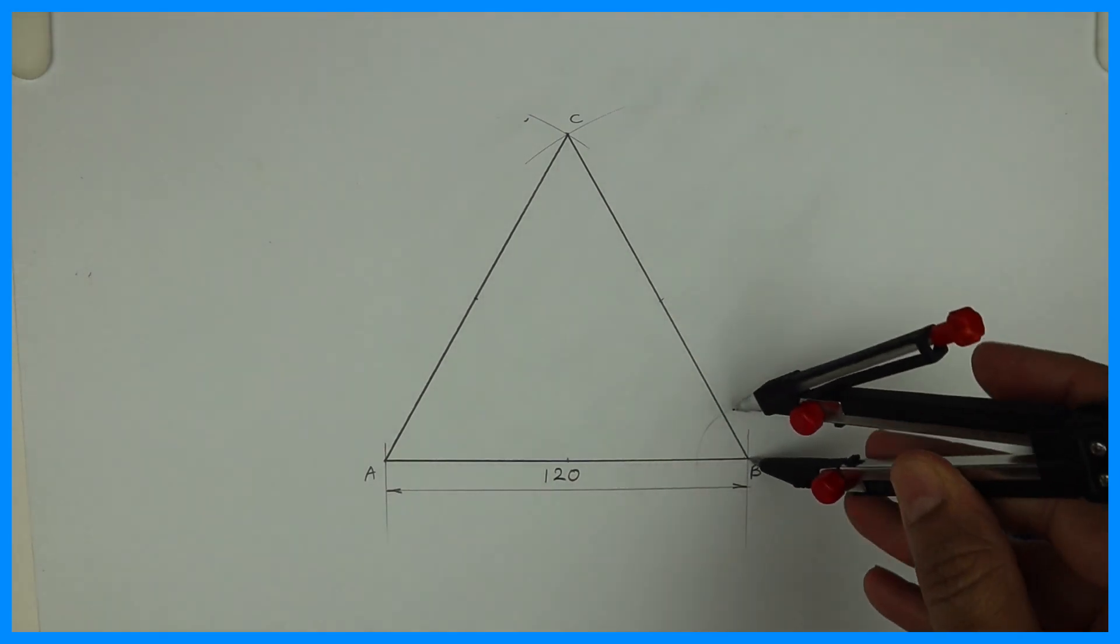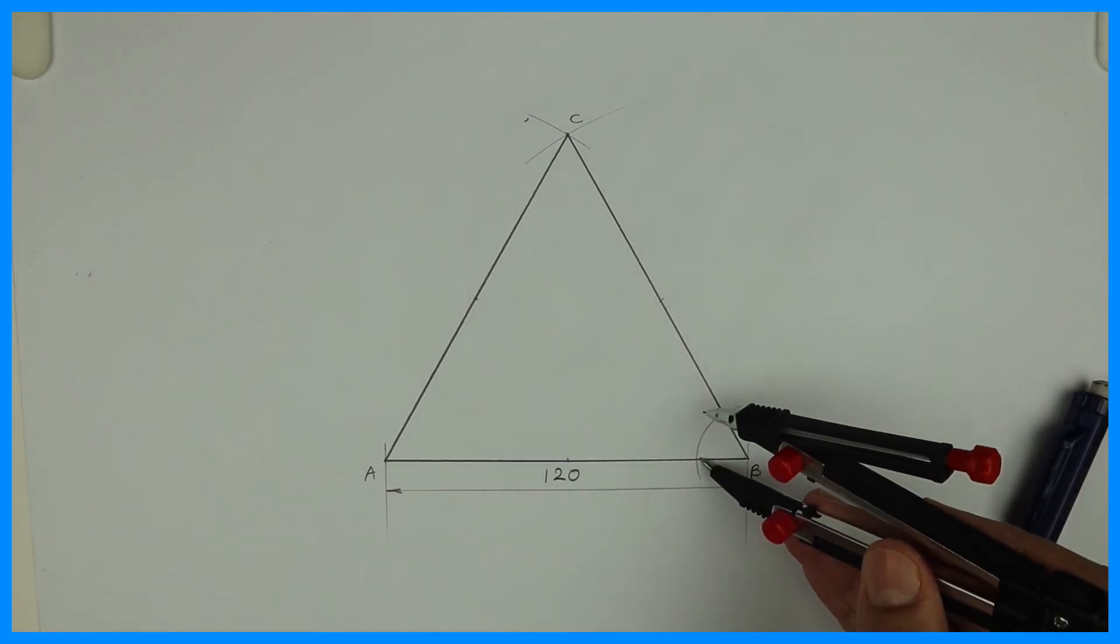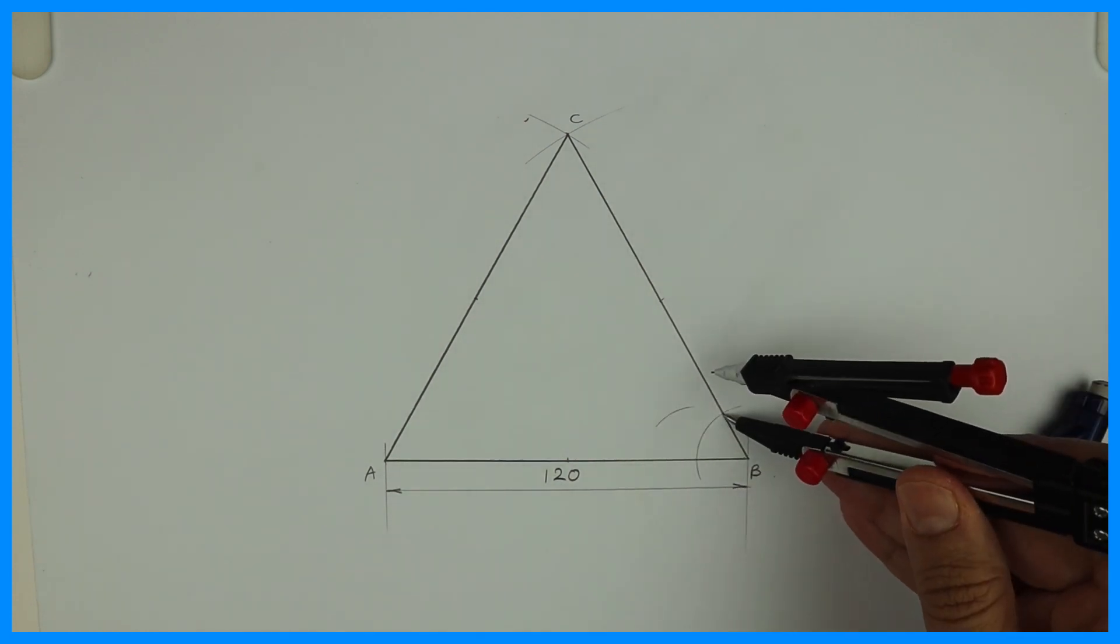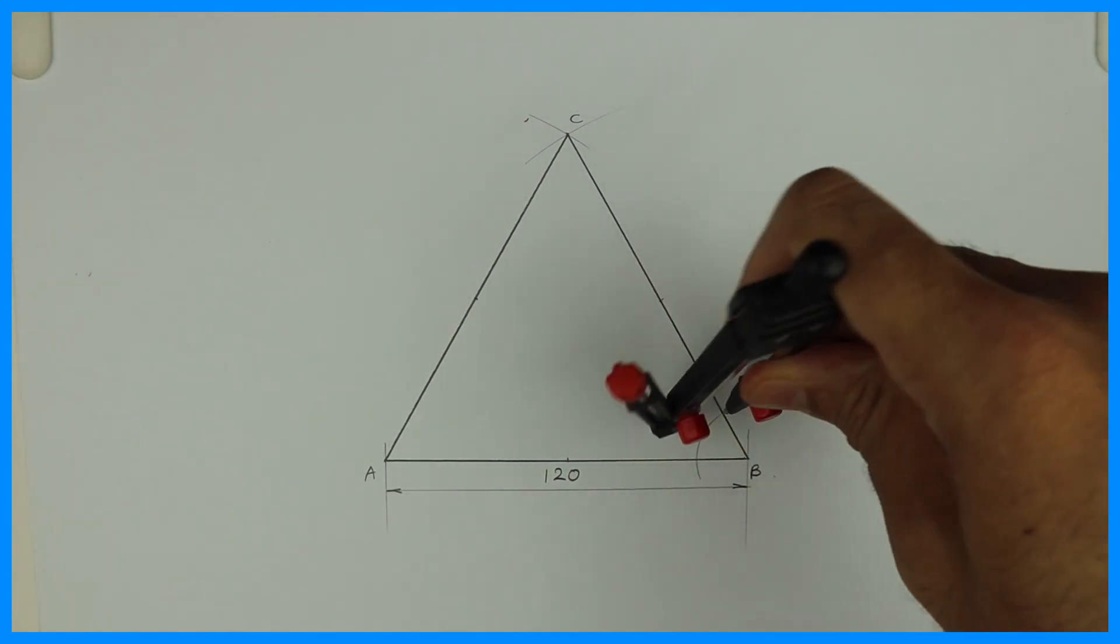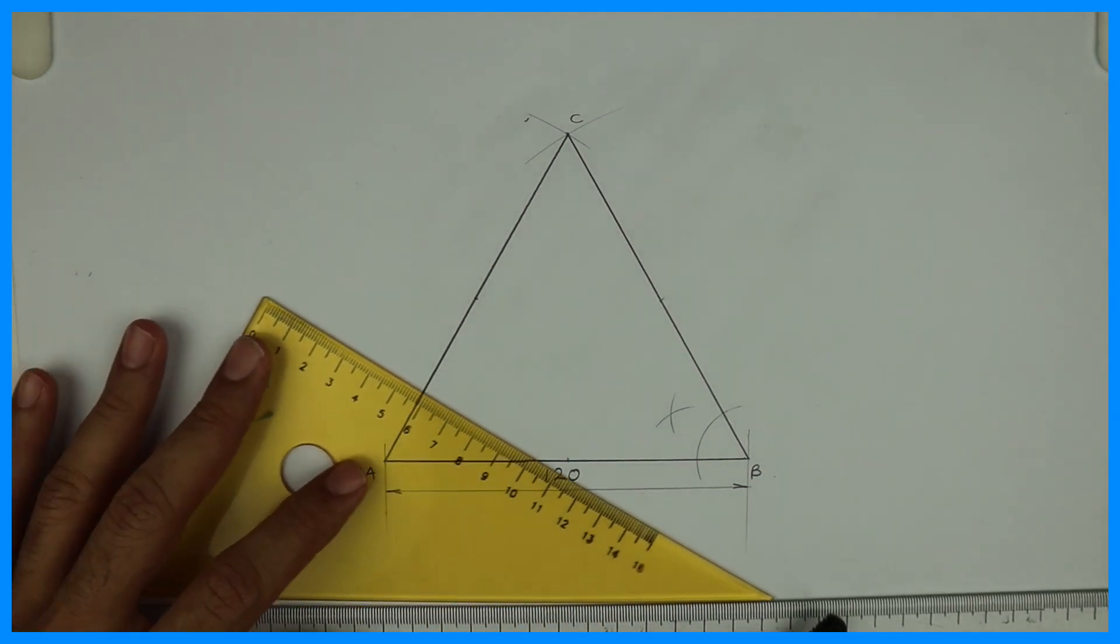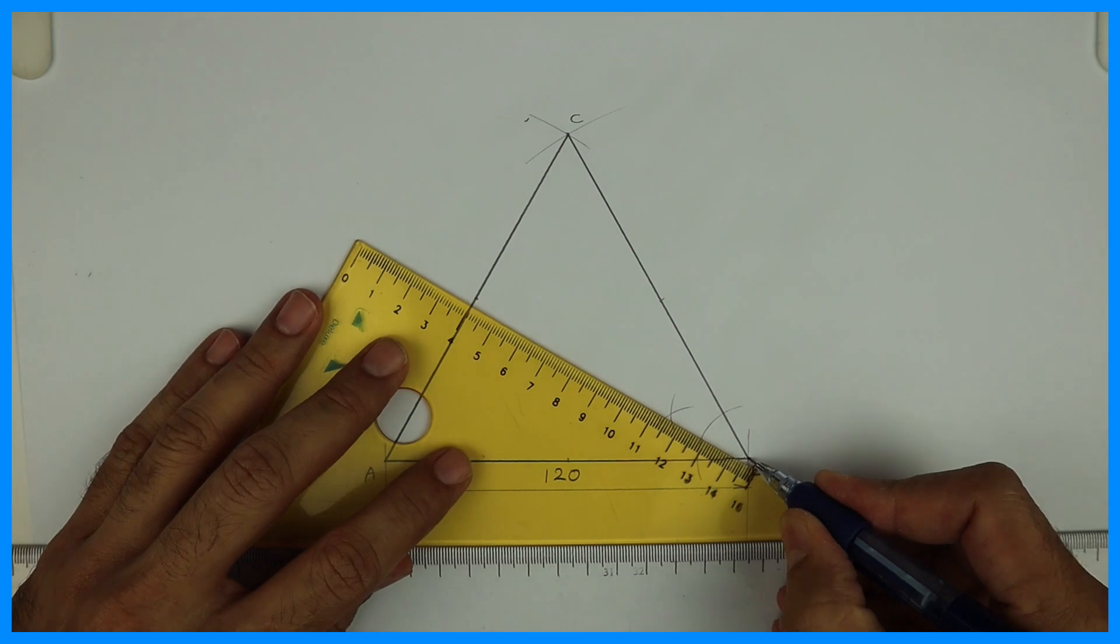From here I will draw bisection. So when I am bisecting I know that it should pass through that midpoint. So then my bisector is proper. It will come accurate but this is just for safety, double check.